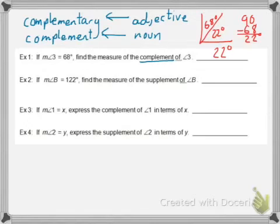Similarly, for example two, it says if measure of Angle B is 122 degrees, find the measure of the supplement of Angle B. Well, supplement means it's the other angle that makes it add up to 180. So if I take 180 minus 122, I would get 58. So therefore, the supplement of 122 degrees is 58 degrees.